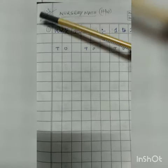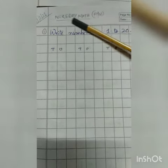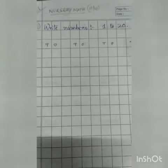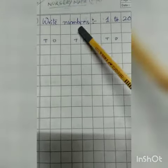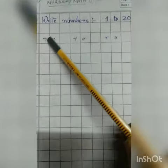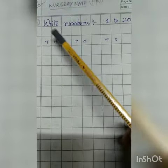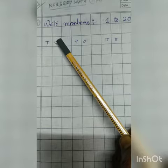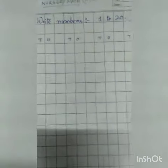Hello, my dear students. Today's date is 11th of January 2021. Our class is nursery math and this is our homework — we did it before and today we'll do it again. You have to write numbers one to twenty. 'O' means ones and 'T' means tens. In Bangla: 'o' mane ekok (ones) and tens mane dashok (tens). So you have to write from one to twenty.